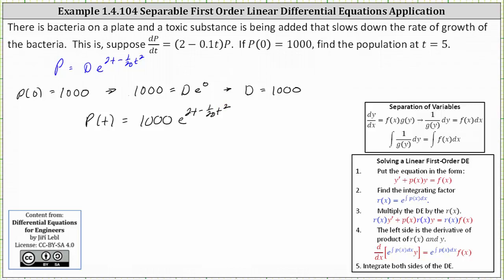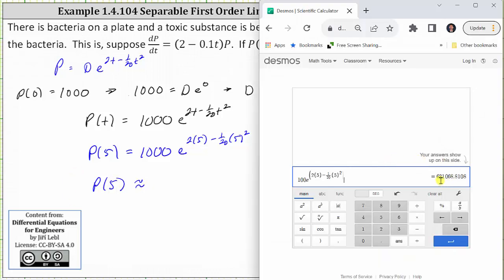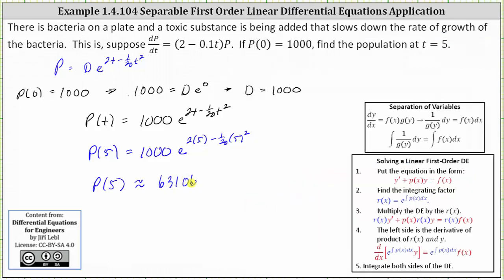The population at t equals 5 is equal to p(5), which is equal to 1,000 times e^(2·5 - 1/20·5²). And now we go to the calculator. Rounding to the nearest whole number, we have 631,069, which indicates that at t equals 5, there are approximately 631,069 bacteria. I hope you found this helpful.